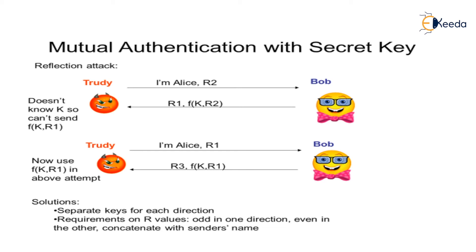The solution to this reflection attack is to maintain separate keys for each direction, and to set requirements on the R values — odd numbers of values should be generated in one direction and even numbers in the other direction — concatenated with the sender's name. With these two solutions, the reflection attack can be prevented in secret key mutual authentication.